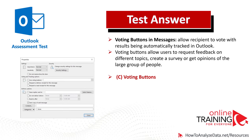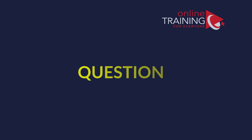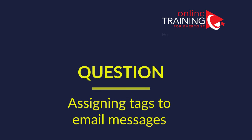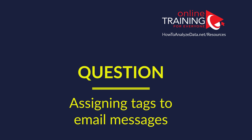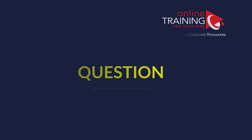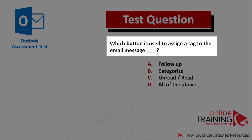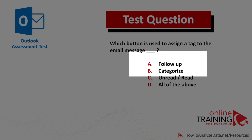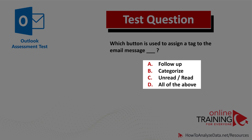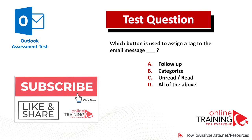Hopefully you've nailed this question. Voting buttons in messages allow recipients to vote with results being automatically tracked in Outlook. They allow users to request feedback on different topics, create custom surveys, and get opinions from a large group of people. Now let's look at another typical question you might frequently see on the Outlook assessment test: which button is used to assign a tag to an email message? You have four choices: Follow-up, Categorize, Unread/Read, or All of the Above.